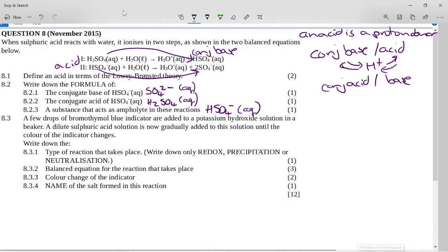It says a few drops of bromothymol blue indicator are added to potassium hydroxide solution in a beaker. A dilute sulfuric acid solution is now gradually added to the solution so the color of the indicator changes. Write down the type of reaction that takes place. Well we've got potassium hydroxide which is the base and we've got sulfuric acid which is an acid. So this is a neutralization reaction. It is not a precipitation reaction because all potassium salts are soluble. It is not a redox reaction because nothing in this reaction changes its oxidation number.